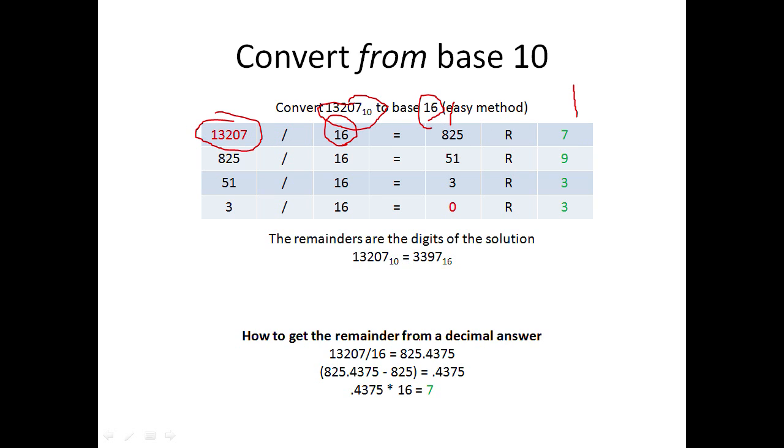When you divide, you get 825.4375. You keep the whole number 825, and multiply the decimal 0.4375 by the base to get the remainder. In this case, 13207 divided by 16 equals 825 remainder 7. Write down 825 remainder 7, then take the 825 and repeat the process.